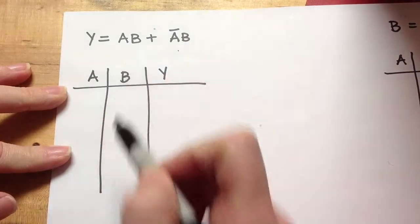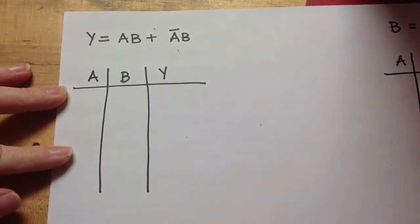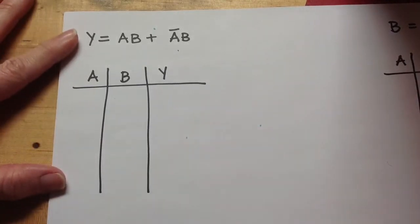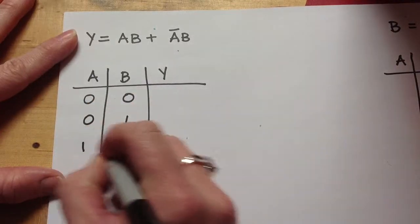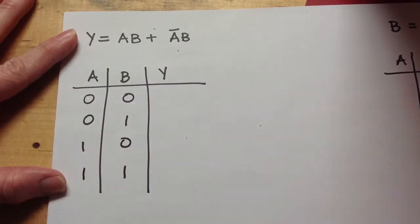So I have two inputs and one output, so I've gone ahead and labeled those columns, and I'm just going to fill in one, zero, zero, zero, one, one, zero, one, one, all right?